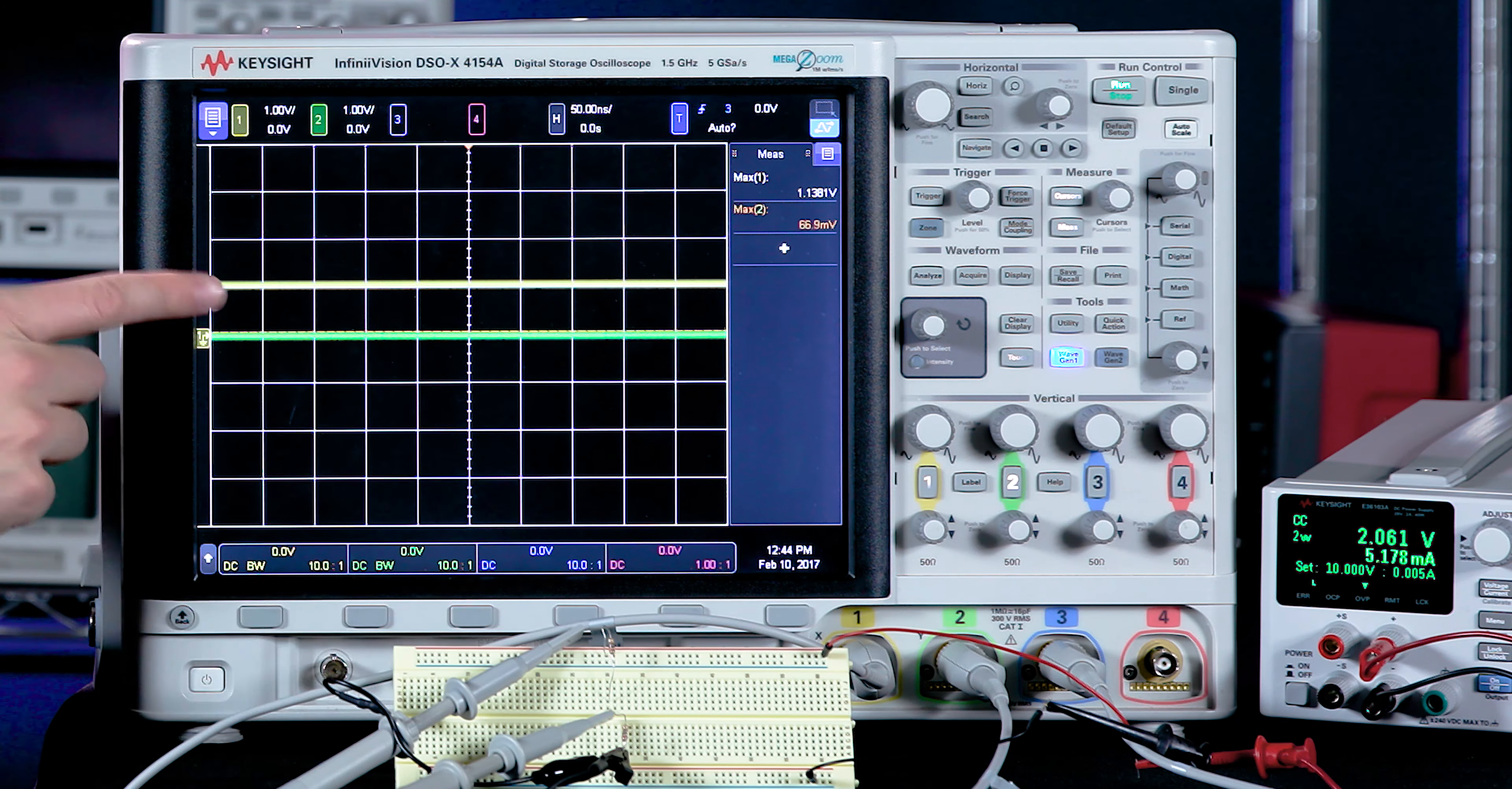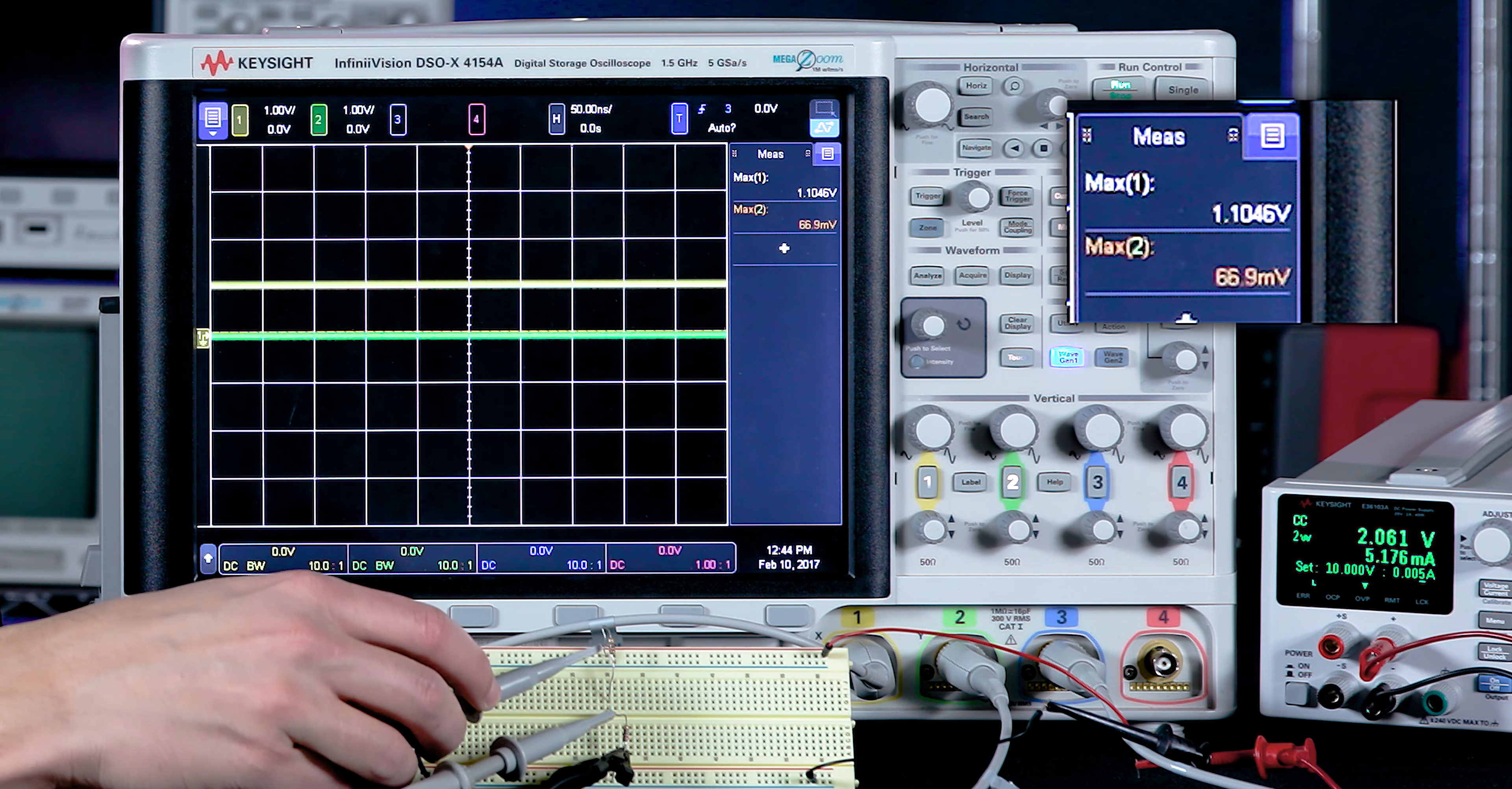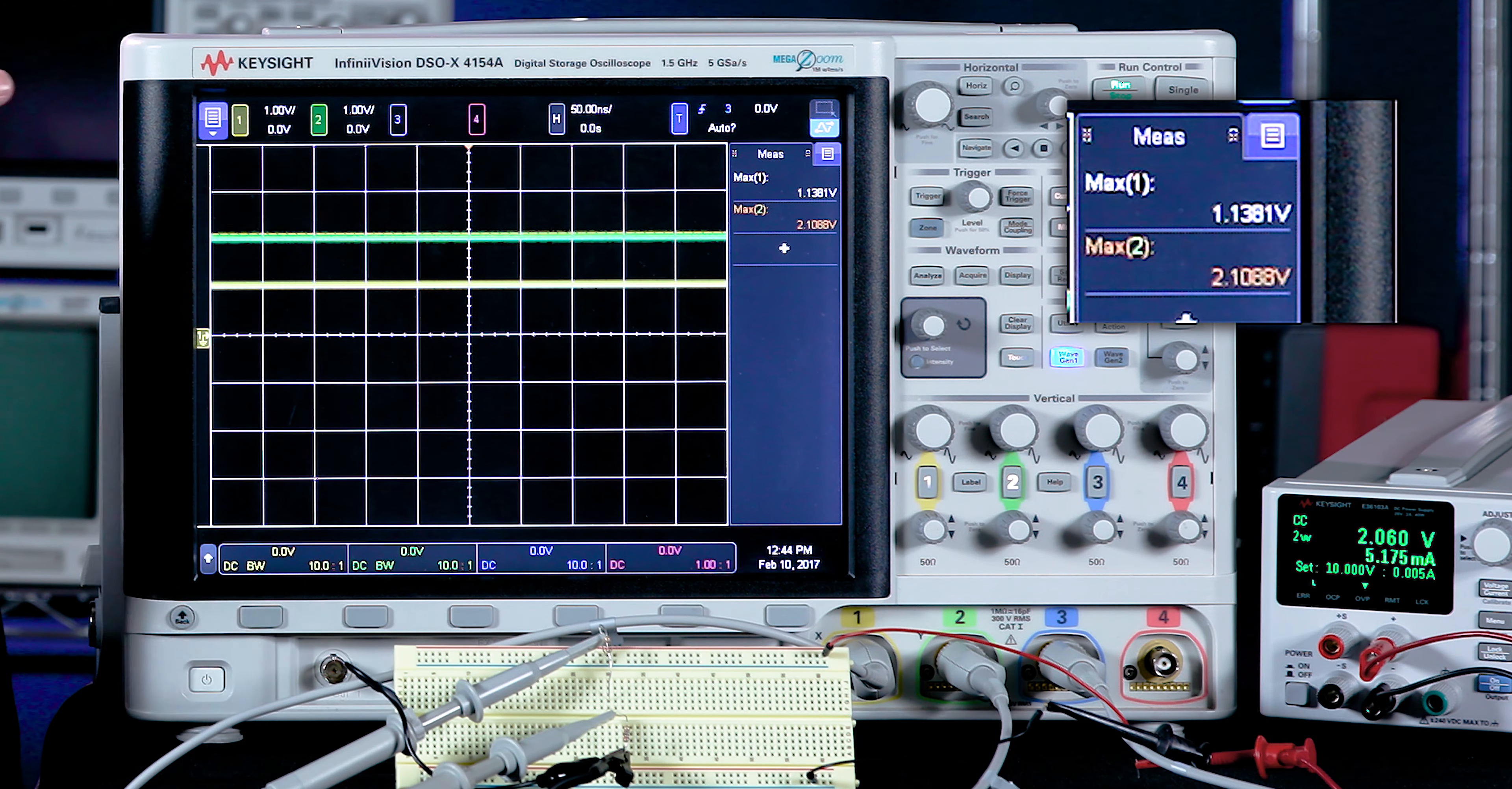So on channel one, I still am at one volt. That's what the power supply has to supply to get five milliamps of current through this one resistor. Let's look at channel two, which is going to be connected to both of these resistors in series. You can see now that the power supply has to supply two volts, so it's working twice as hard as before.